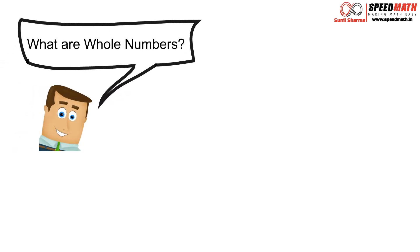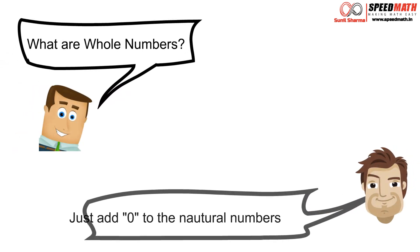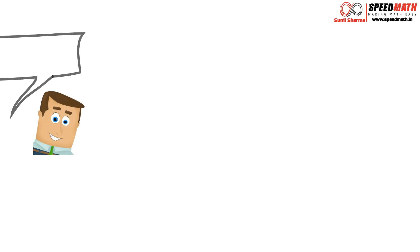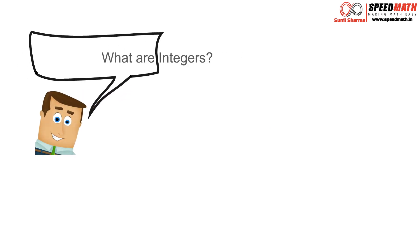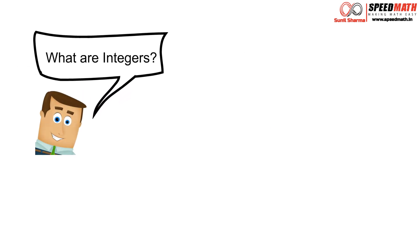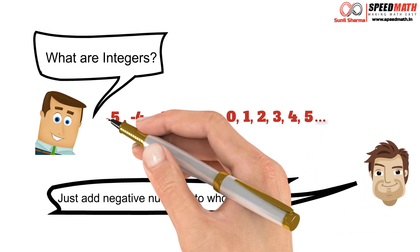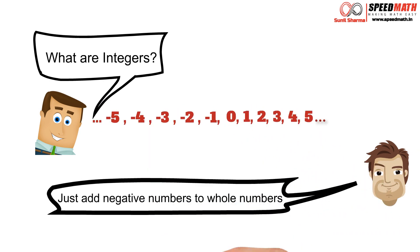Mr. Logic asks: so what are whole numbers? Mr. Math says: that's pretty easy, just add 0 to the natural numbers and that collection will be called whole numbers. Mr. Logic asks: what are integers then? Mr. Math says: just add negative numbers before the whole numbers, so this new collection of positive numbers, negative numbers along with zero are called integers.